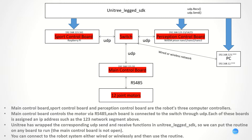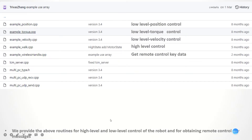We can put the routine on any board to run, except the main control board. Pay attention — the main control board is not opened. You can connect to the robot system either wired or wirelessly, and then use the routine. We also provide routines for high-level and low-level control of the robot dog, as well as for obtaining remote control messages.